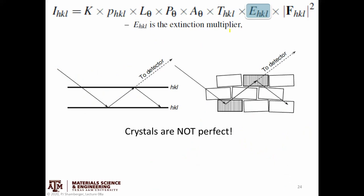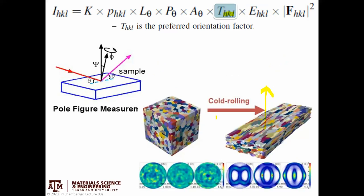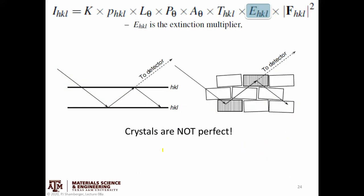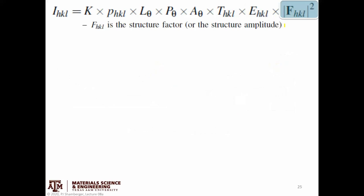E_HKL is the extinction multiplier, which accounts for the fact that crystals are not perfect — there tends to be some disorder even within a crystal. This is not a strong effect in most cases and primarily comes up when discussing single crystals, so we won't focus on it too much.